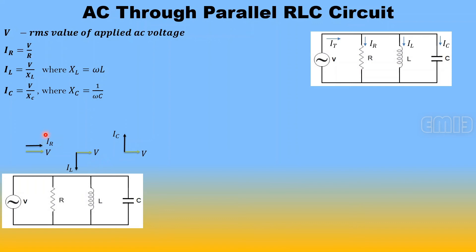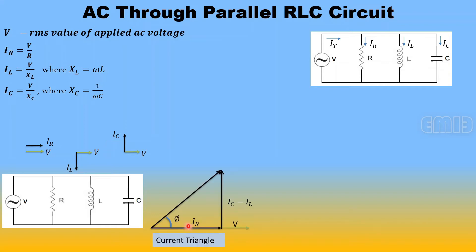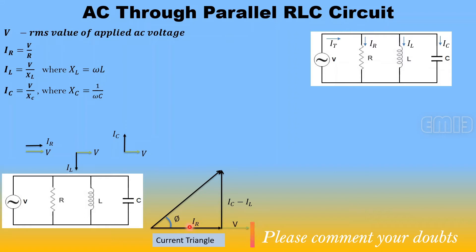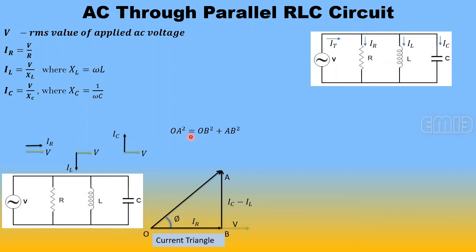To find the net current drawn from voltage source V, we find the resultant of IR, IL, and IC. Since IL and IC are in opposite directions, we use a current triangle: IR is drawn in phase with voltage V, and the difference IC minus IL is drawn perpendicular to V. Applying the Pythagorean theorem to triangle OAB: IT² = IR² + (IC − IL)², therefore IT = √(IR² + (IC − IL)²).